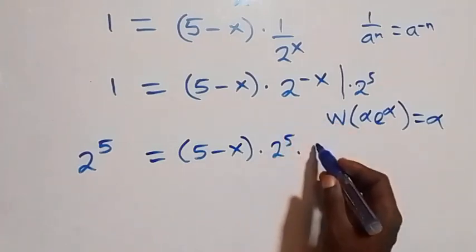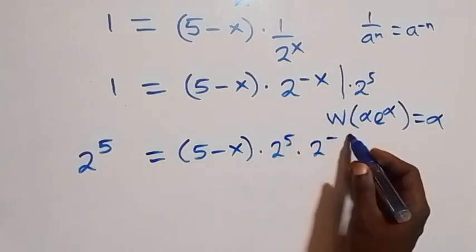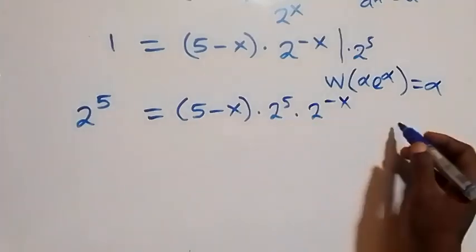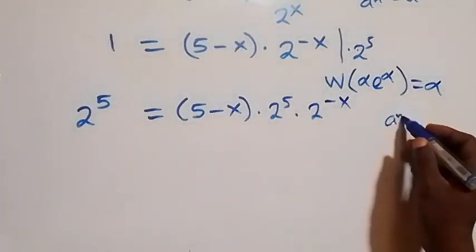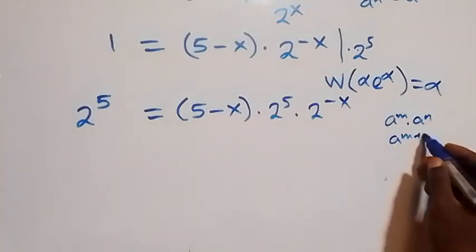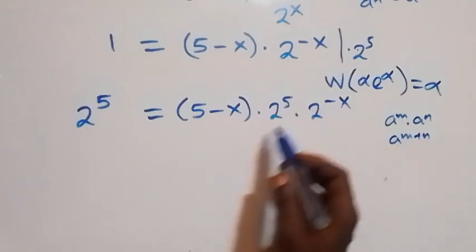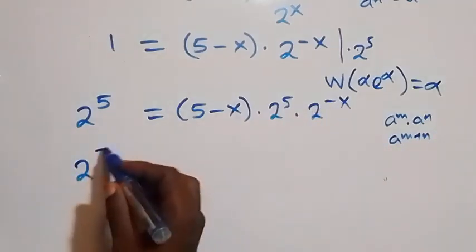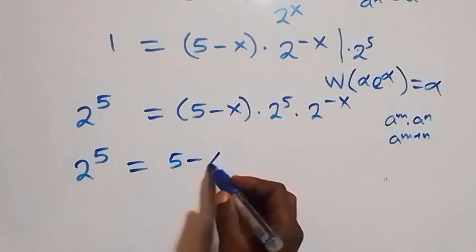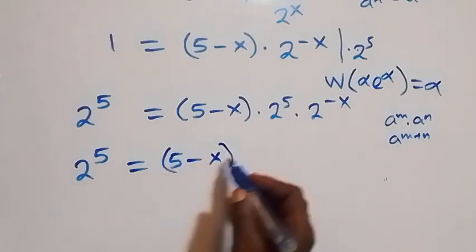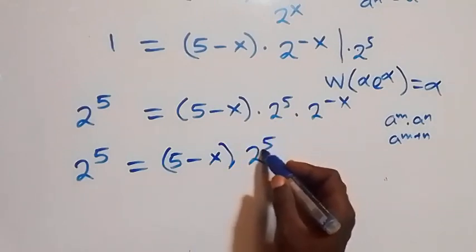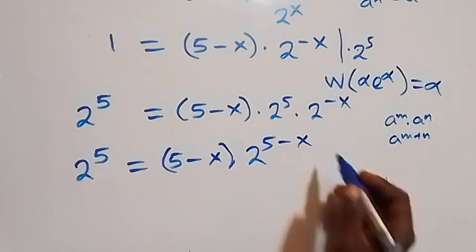On the right side we have 5 minus x times 2 raised to power 5 times 2 raised to power minus x. From the law of indices, e raised to power n times e raised to power m equals e raised to power n plus m, so the powers combine: 2 raised to power 5 equals 5 minus x multiplied by 2 raised to power 5 minus x.